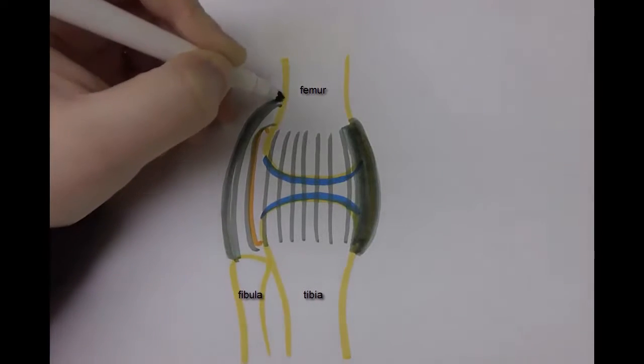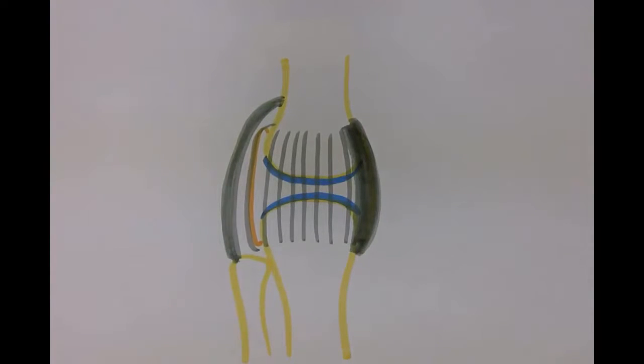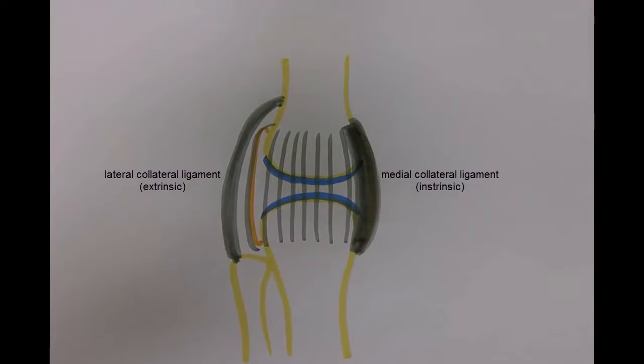So here we have a ligament running from the femur to the head of the fibula that is not a part of the fibrous joint capsule and is therefore classified as being extrinsic.